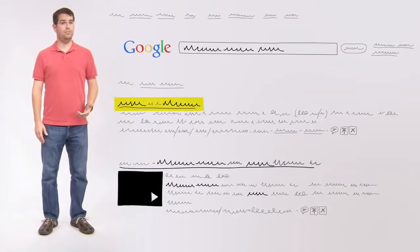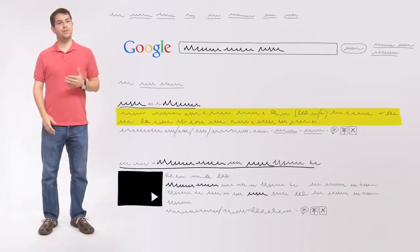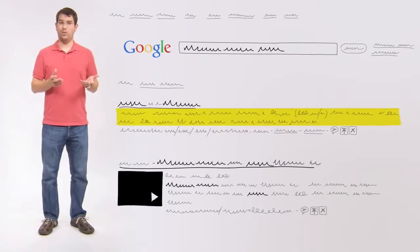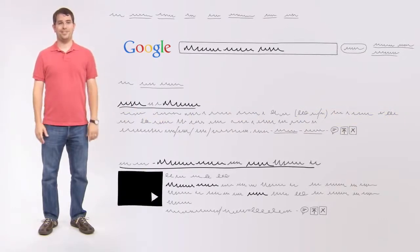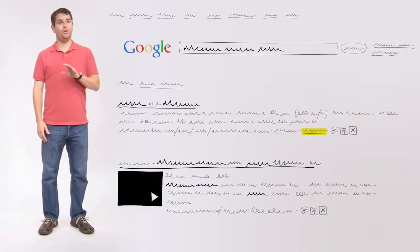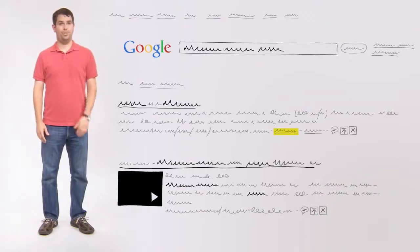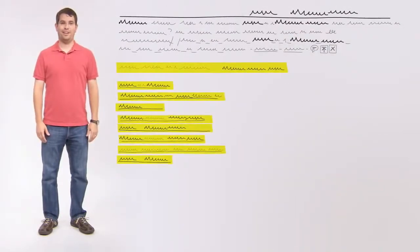Each entry includes a title, a URL, and a snippet of text to help me decide whether this page is what I'm looking for. I also see links to similar pages, Google's most recent stored version of that page, and related searches that I might want to try next.